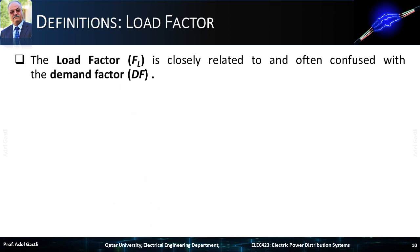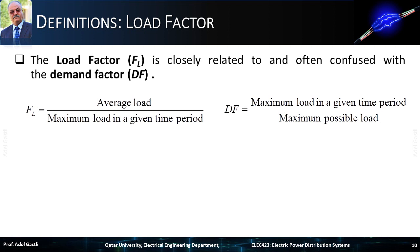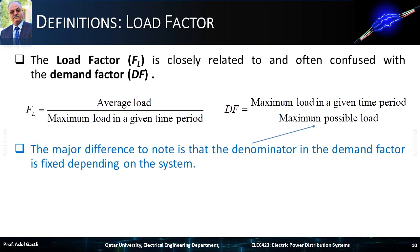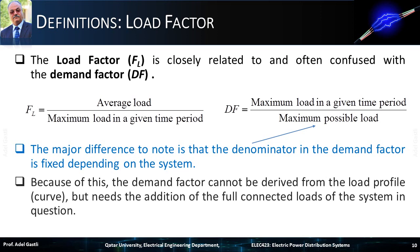The load factor is closely related to, and often confused with, the demand factor. The load factor is calculated as the ratio of the average load over the maximum load in a given time period, while the demand factor is the ratio of the maximum load in a given time period over the maximum possible load. The major difference is that the denominator in the demand factor is fixed depending on the system, so the demand factor cannot be derived from the load profile or curve, but needs the addition of the full loads of the system in question.